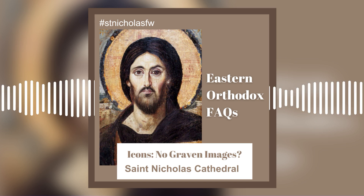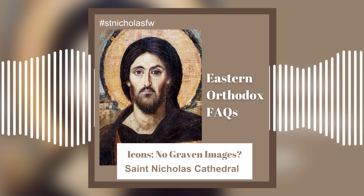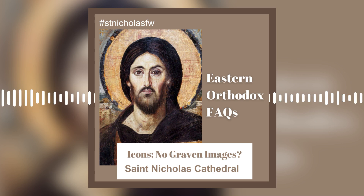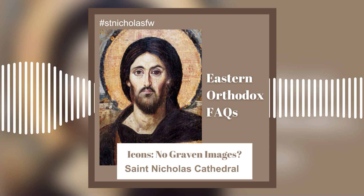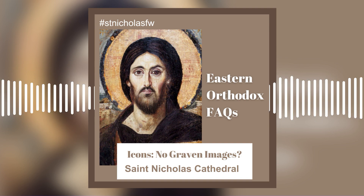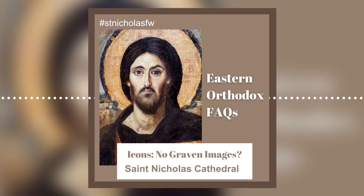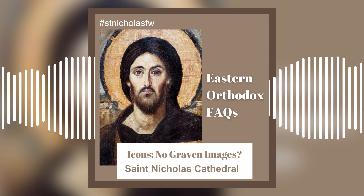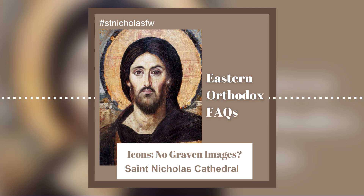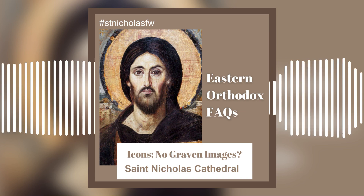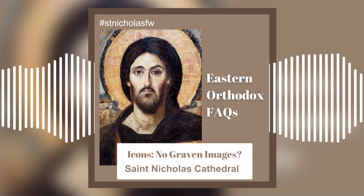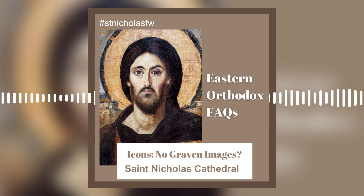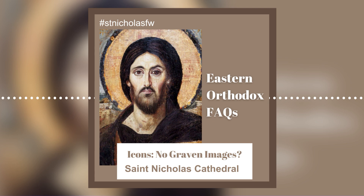So that's Exodus 25 — the mercy seat and the images of two angels. Moreover, Exodus 26:1 says: 'You shall make the tabernacle with ten curtains of fine twined linen and blue and purple and scarlet yarns; you shall make them with cherubim skillfully worked into them.' In other words, you are going to embroider images of angels into these curtains that will then make the walls of the tabernacle. So again — Exodus 20: don't make any images; Exodus 25: make three-dimensional images of angels; Exodus 26: embroider images of angels into the walls of the tabernacle.